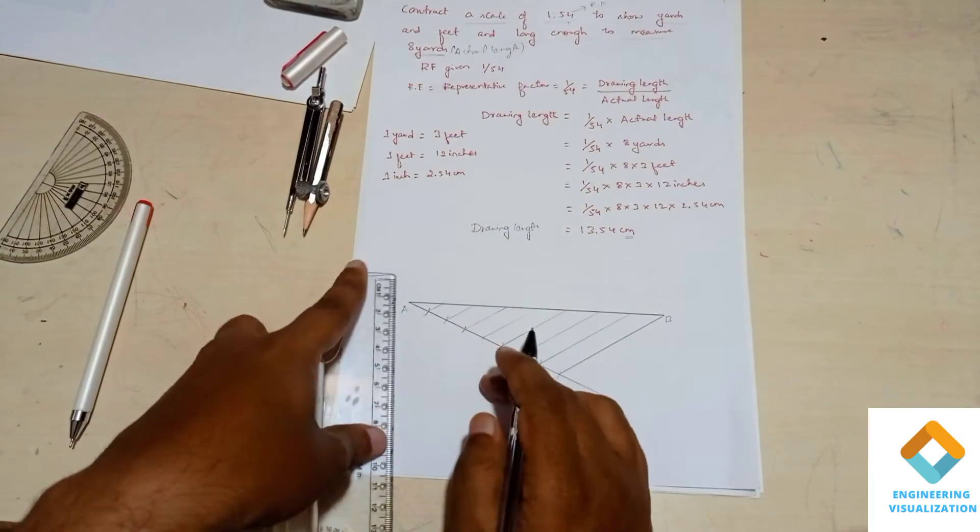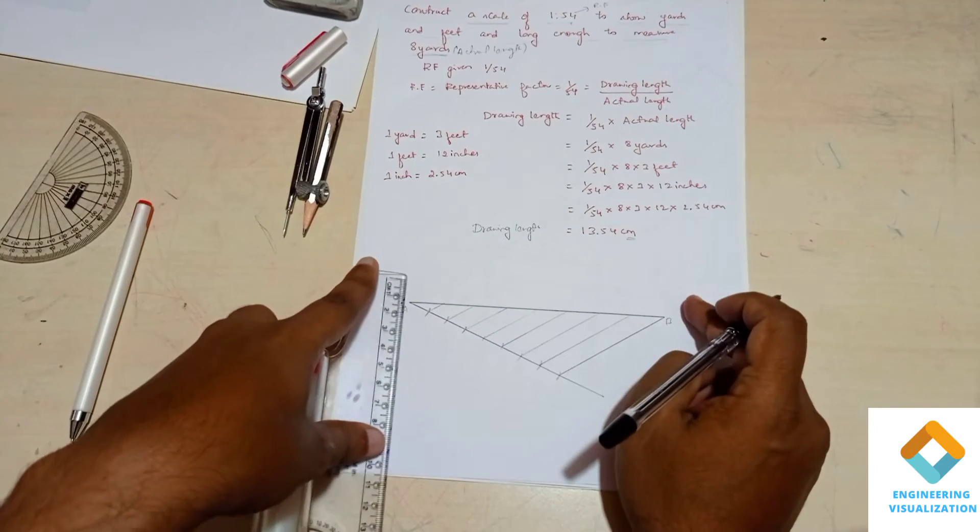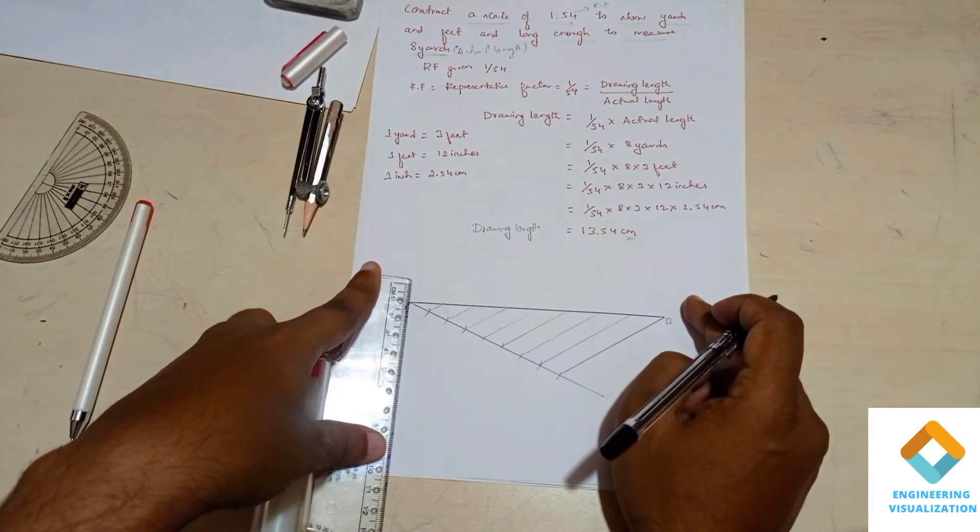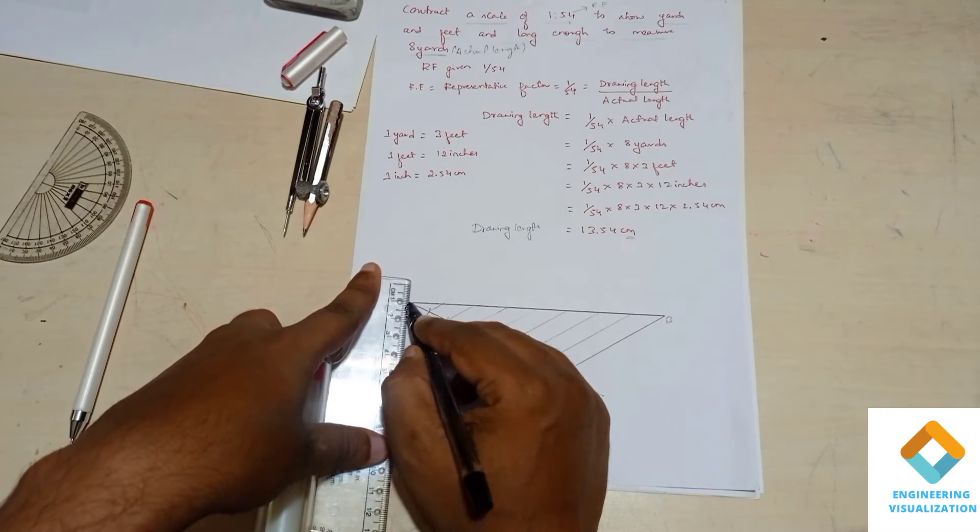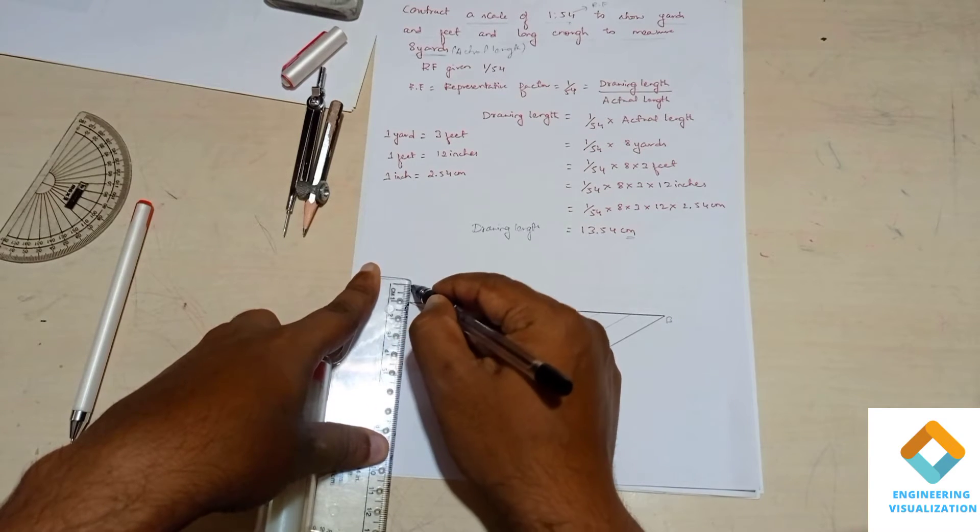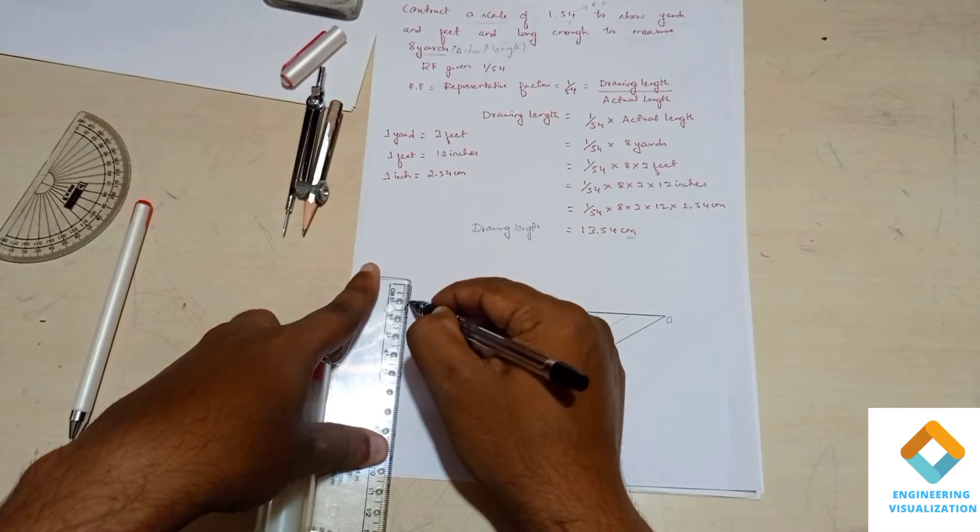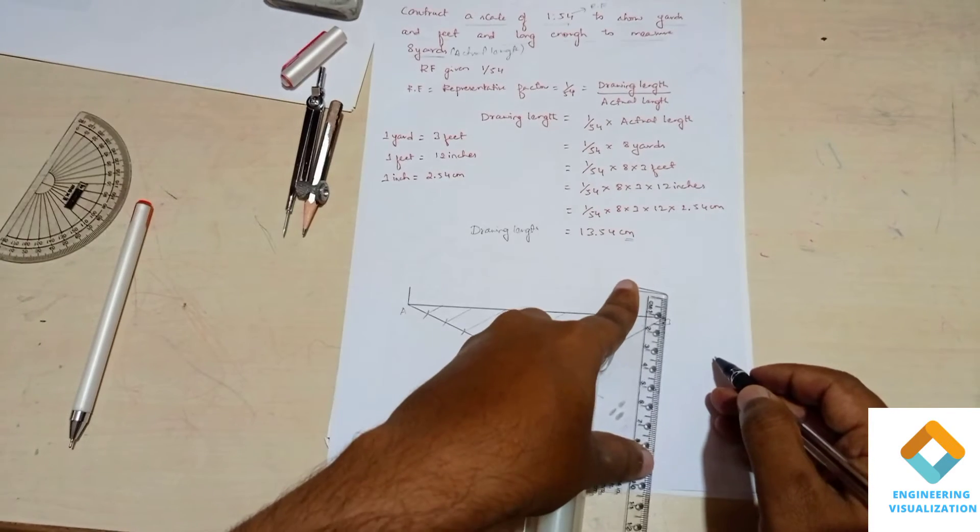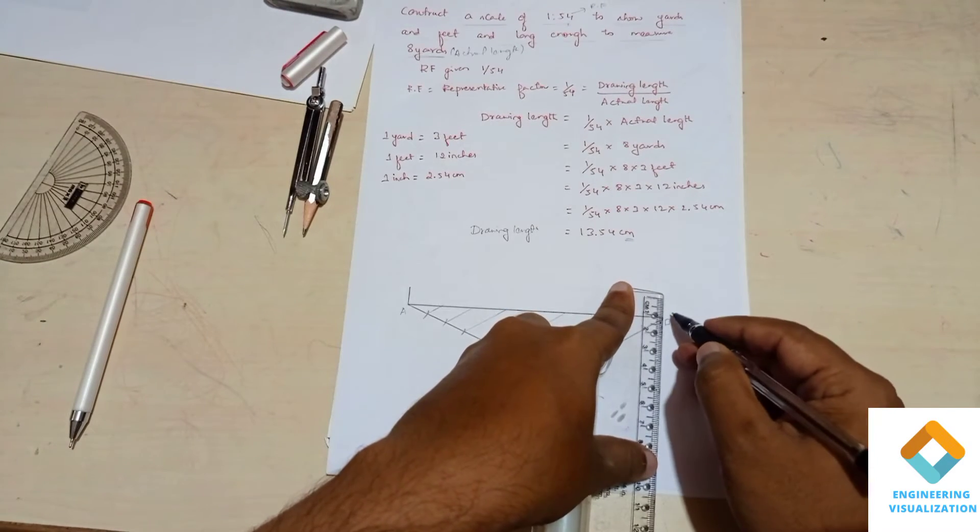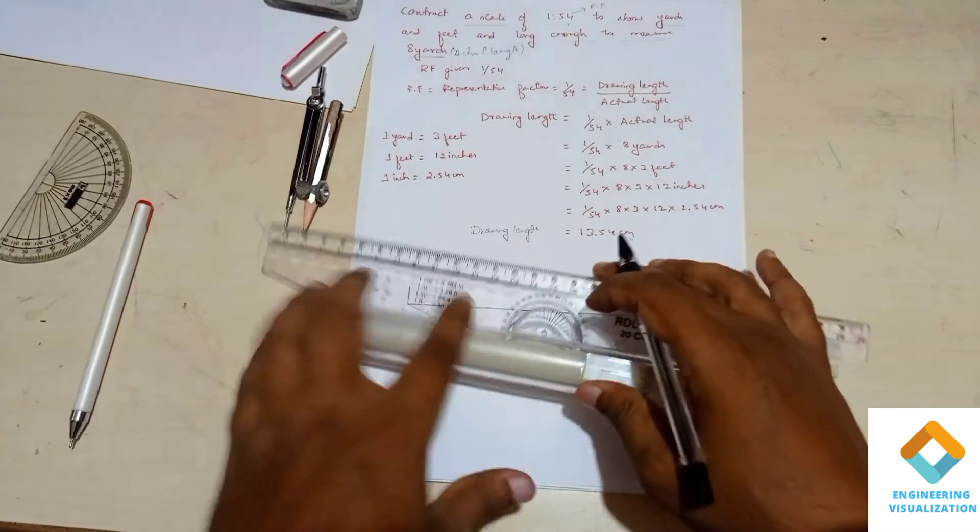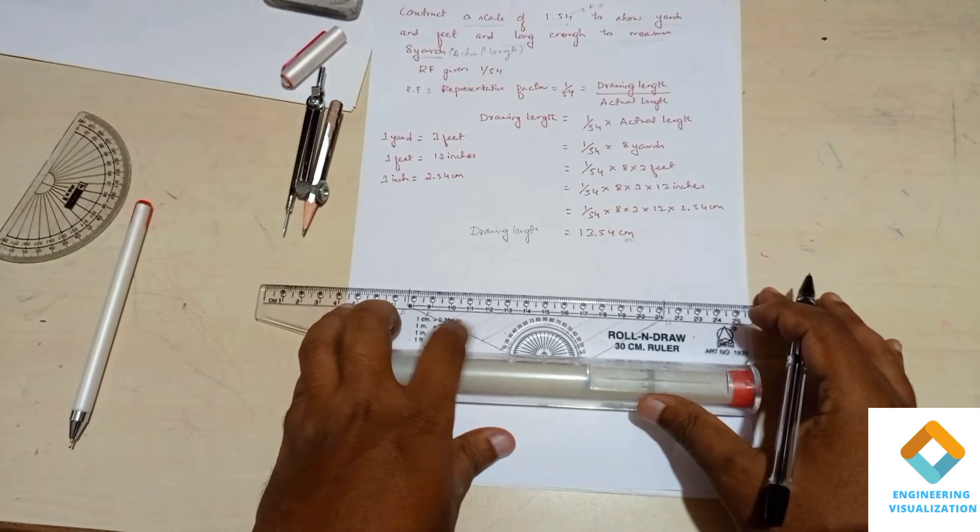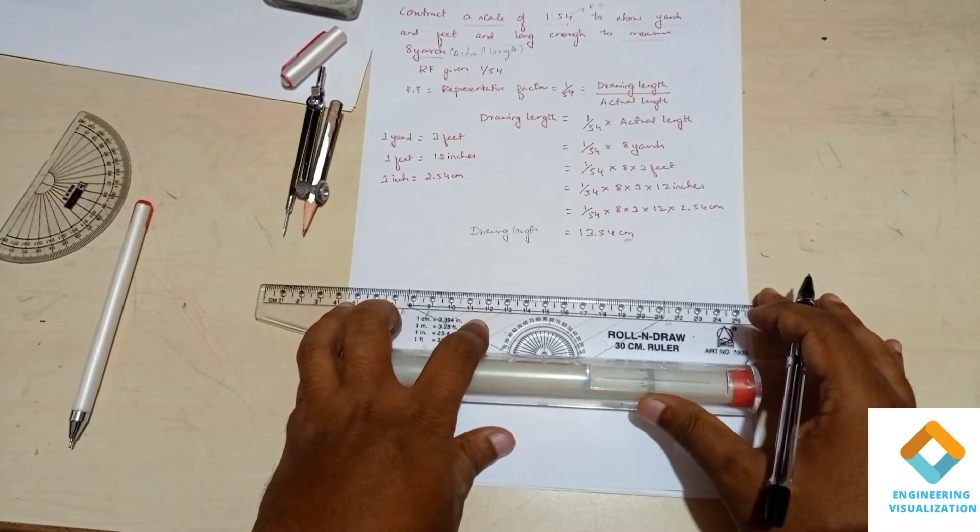Now we will draw width to give the scale. For this width I'll take one centimeter as height for giving the width for the scale, and join these extreme points.